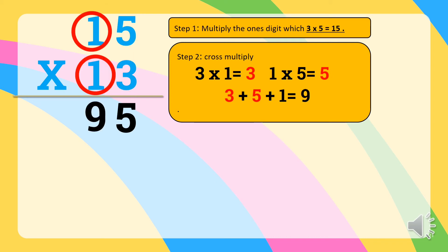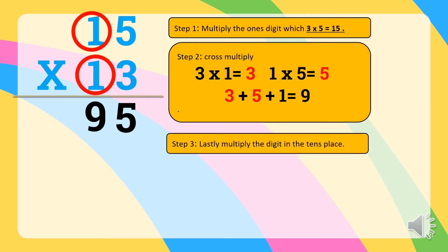Step 3 is to multiply the digits in the tens place. So 1 times 1 is equal to 1. Therefore, 15 times 13 is equal to 195.